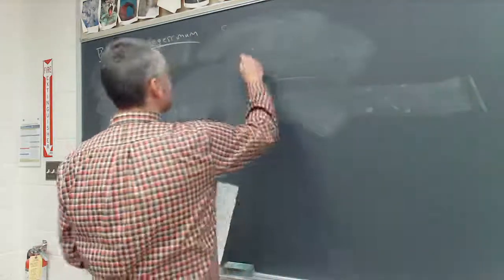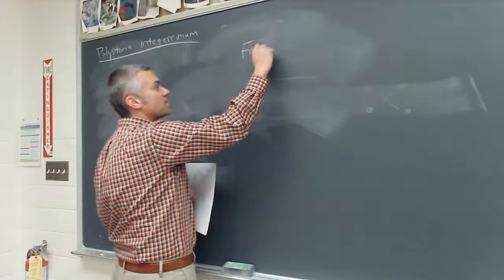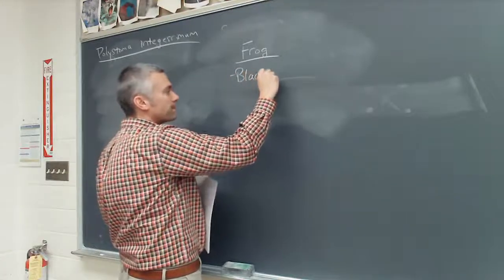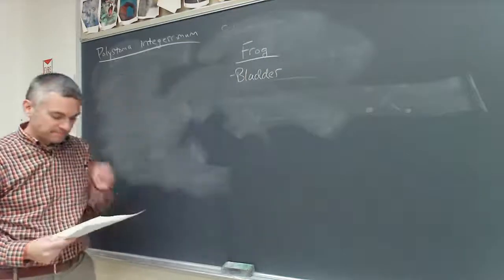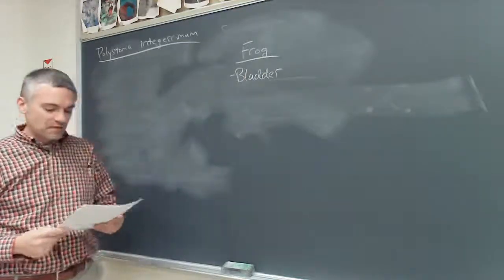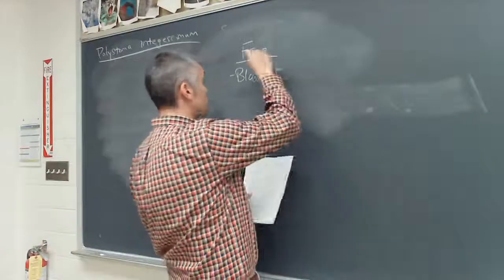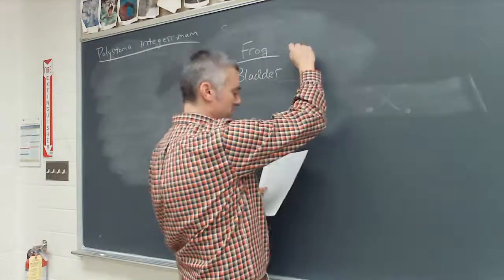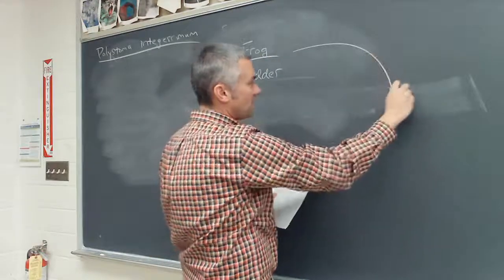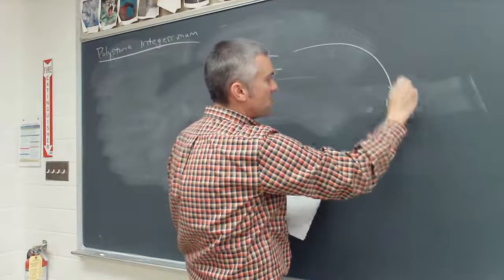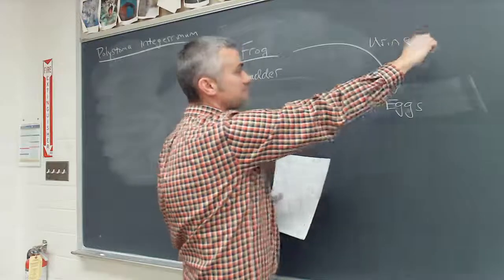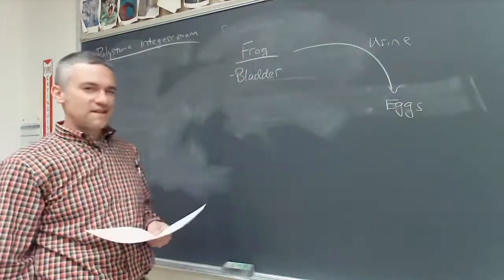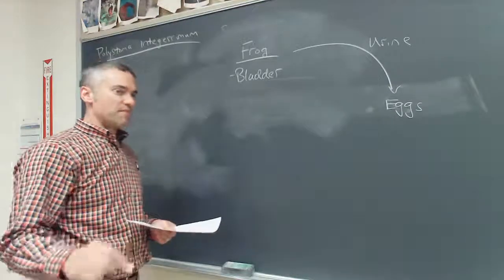So our definitive host is a frog — these are European and Asian frogs. The parasite lives in the bladder of the frog. The adult is there, eggs get released in the urine, and the eggs take about 20 to 50 days to develop before they hatch, releasing the oncomiracidium.